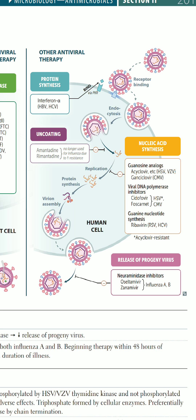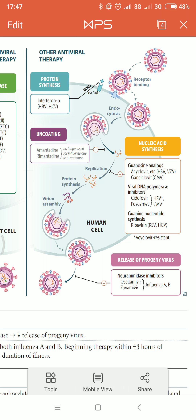Comparing other viruses with HIV: once a virus enters the human cell, it gets uncoated. Uncoating is prevented by amantadine and rimantadine, though these are no longer used for influenza due to increased resistance. After uncoating, viral nucleic acid synthesis is inhibited by guanosine analogs like acyclovir and ganciclovir.